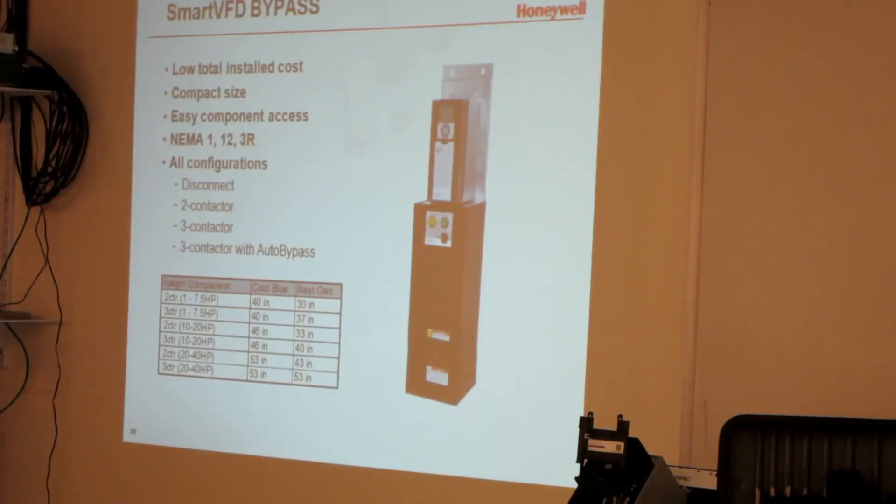The standard VFD bypass. This is what it looks like for the Smart VFD, I think it's similar for the NXS. The configurations: one is disconnect only, you don't fuse disconnect, two contactor or three contactor, or three contactor with auto bypass. That scares me. Auto bypass means the alarm goes on, it automatically goes into bypass. Why would you do that? But someone asked for it. Some engineer said, well, it's got to go into auto bypass, you know, you can't have the kids too hot in school. Enable one, two and three are available for the bypass. And three, of course, would be...